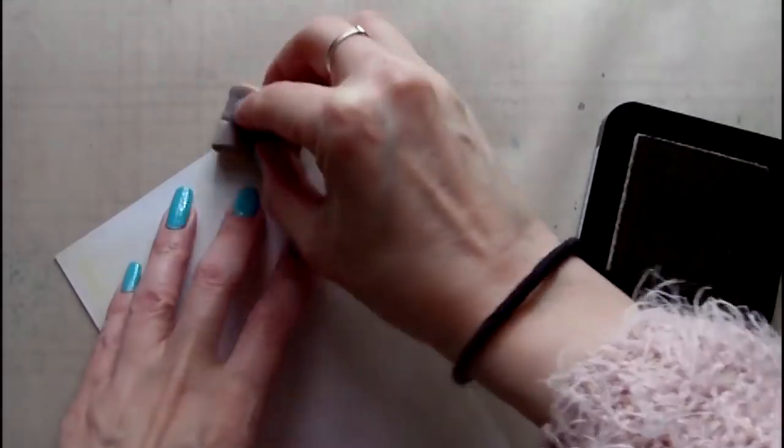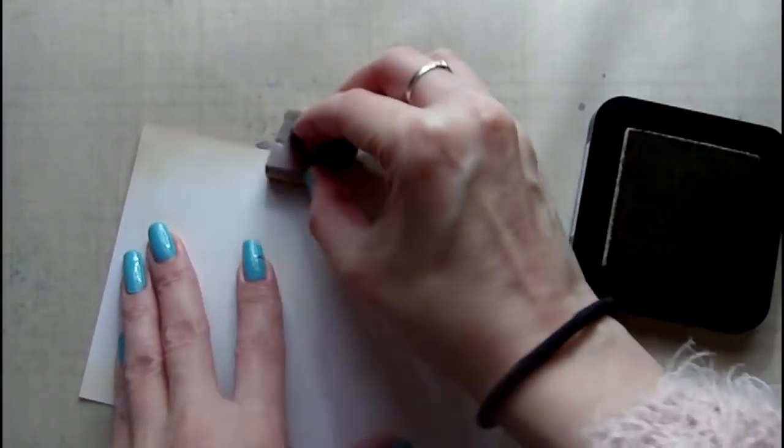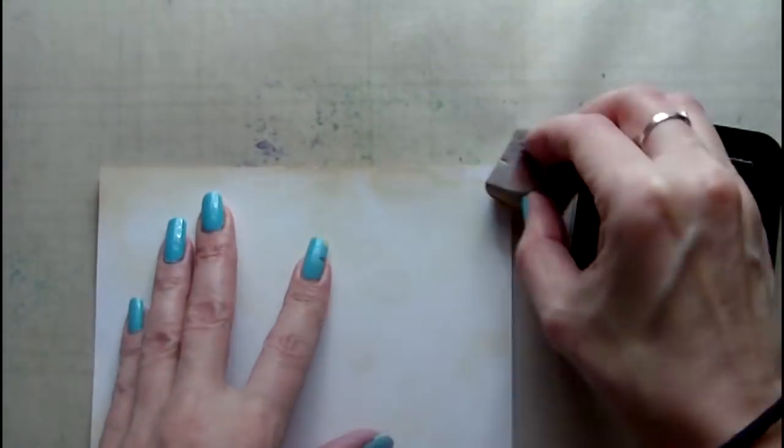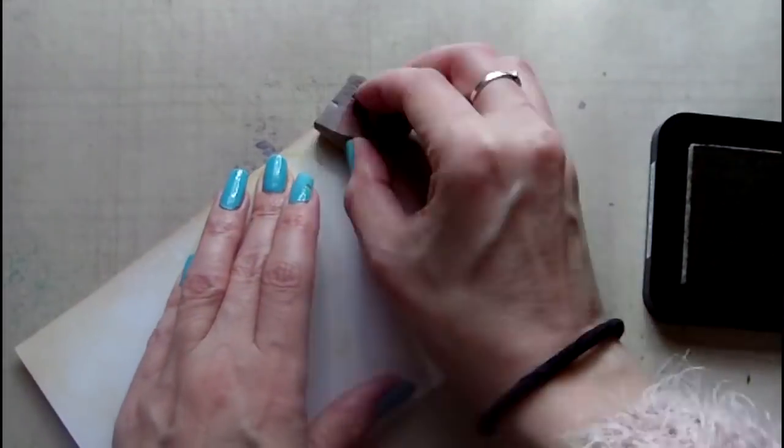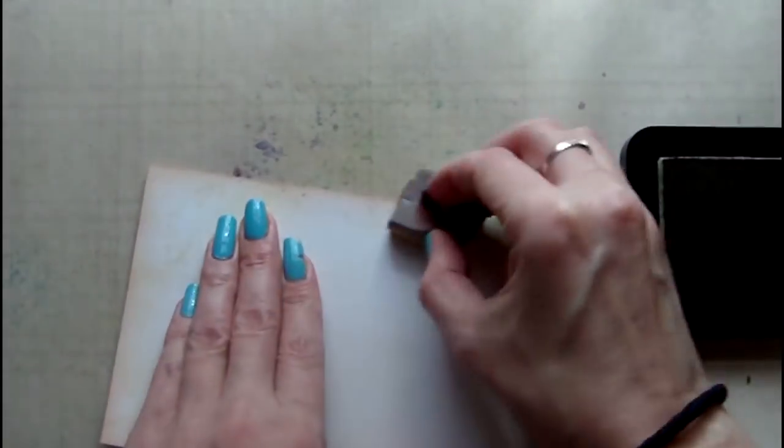Once it's dry, I continue to add distress inks around the outside of the postcard. I start with some antique linen, then some tea dye, followed by vintage photo, and finally some walnut stain.